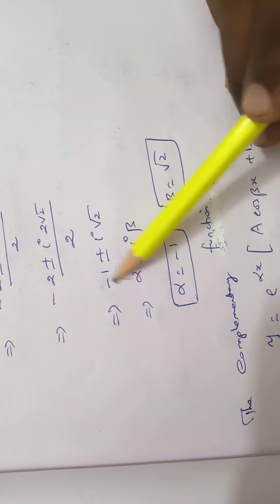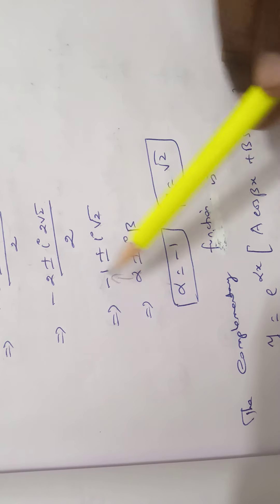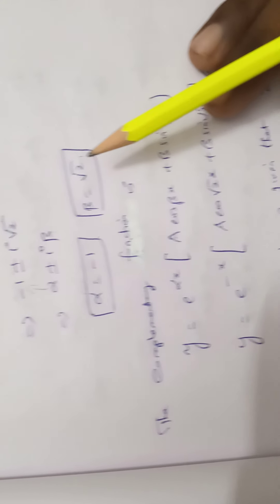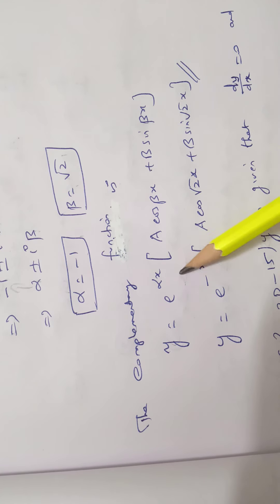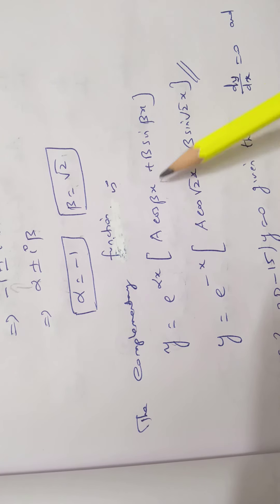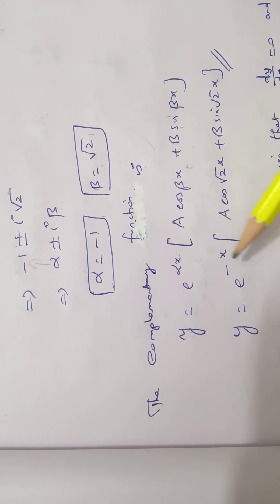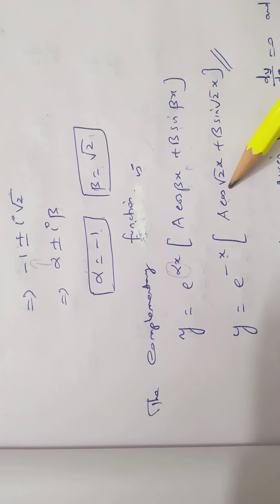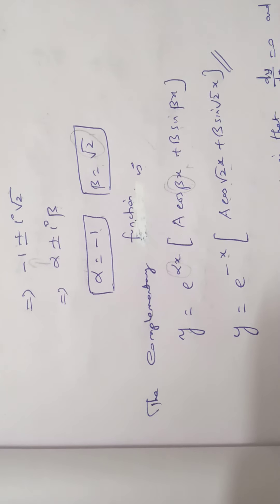This gives alpha = -1 (real part) and beta = √2 (imaginary part). The complementary function is y = e^(αx)·(a·cos(βx) + b·sin(βx)), so the final answer is y = e^(-x)·(a·cos(√2·x) + b·sin(√2·x)). That is the problem.